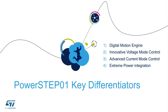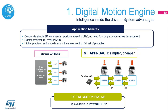The digital motion engine enables the use of smaller microcontrollers or microcontrollers with a lighter architecture. Motor control is provided by high-level commands. These positioning or speed profile commands are sent from the microcontroller via the SPI bus. Complex subroutines are already built in to the motor driver, and there is no need for complex subroutines to run on the microcontroller.